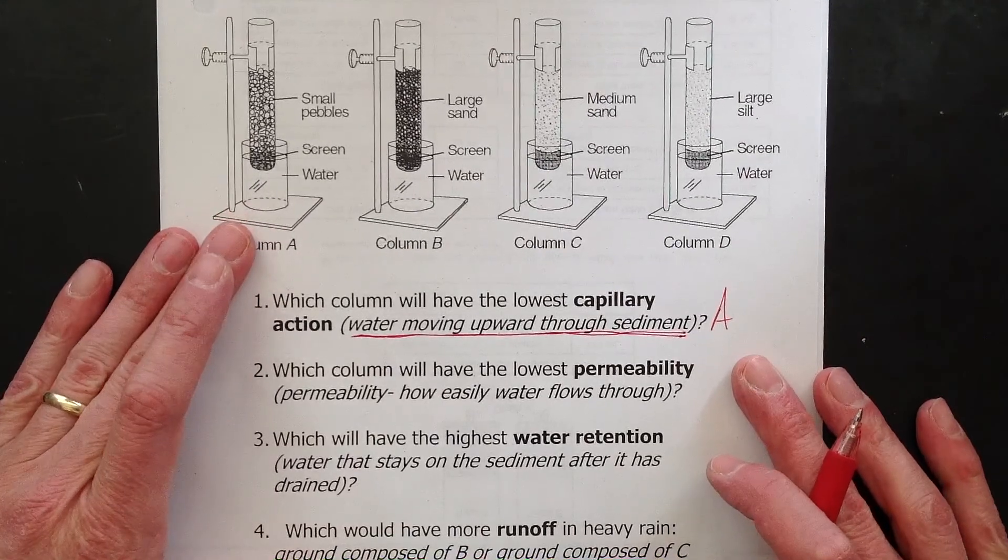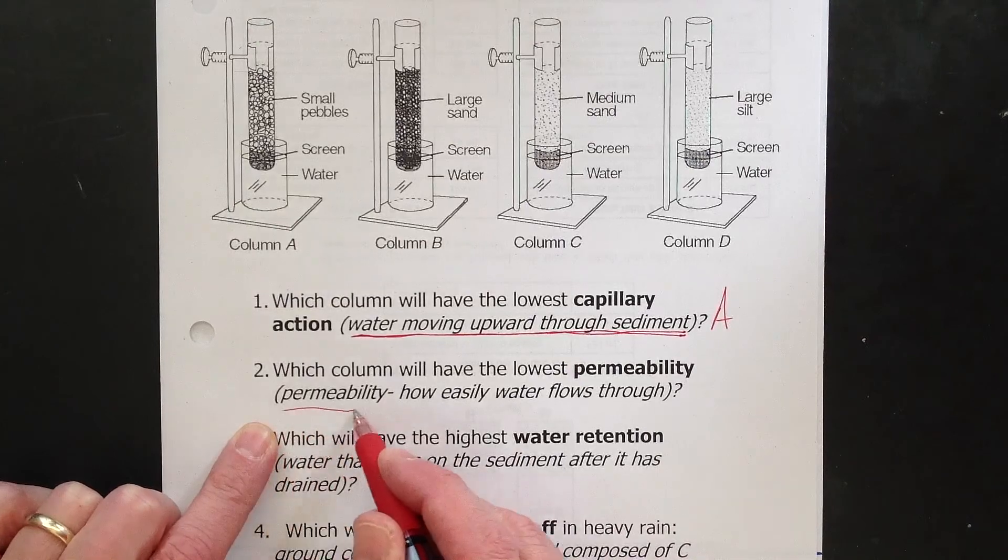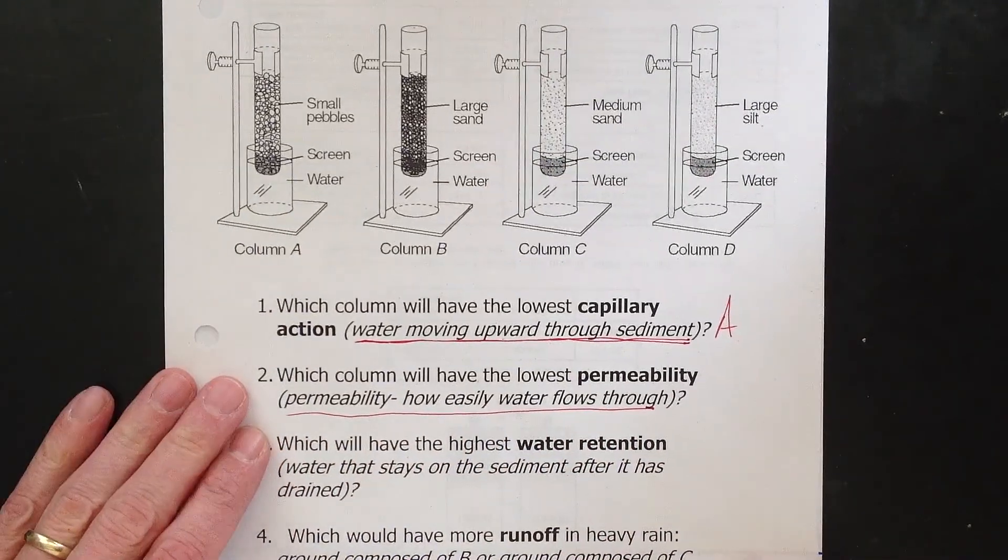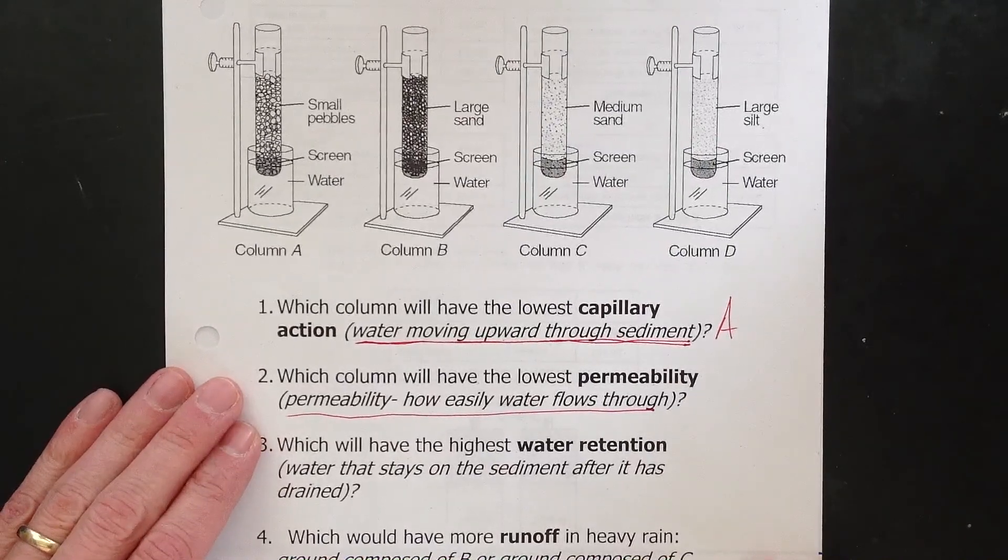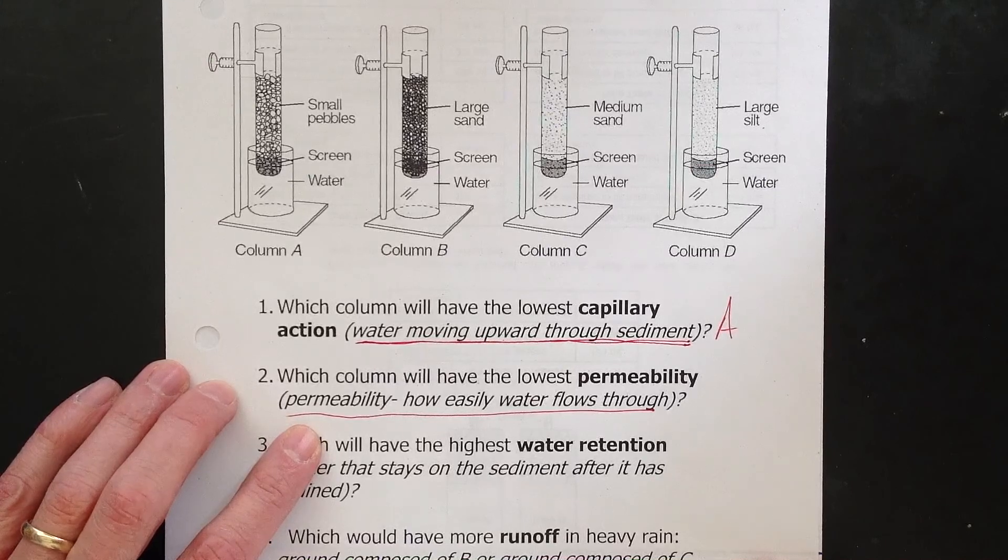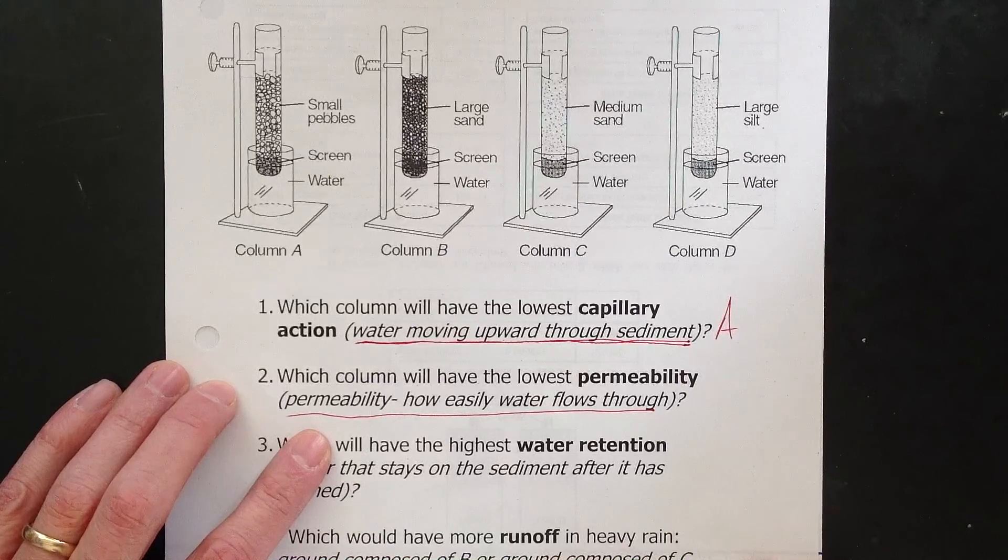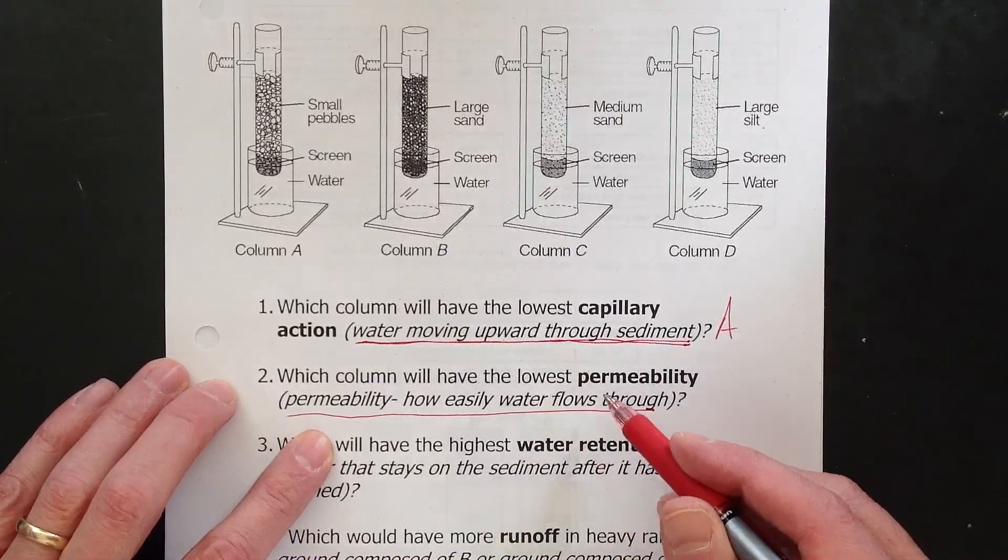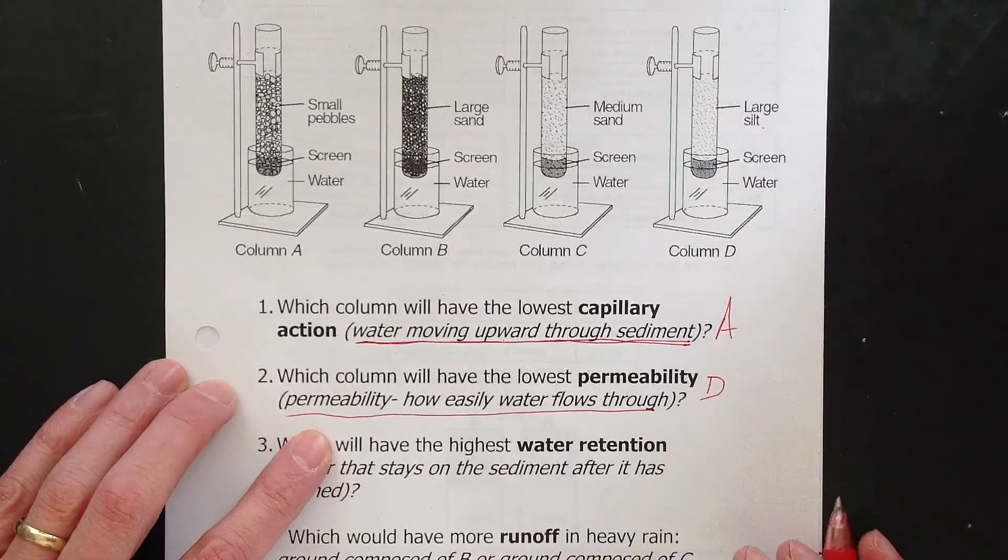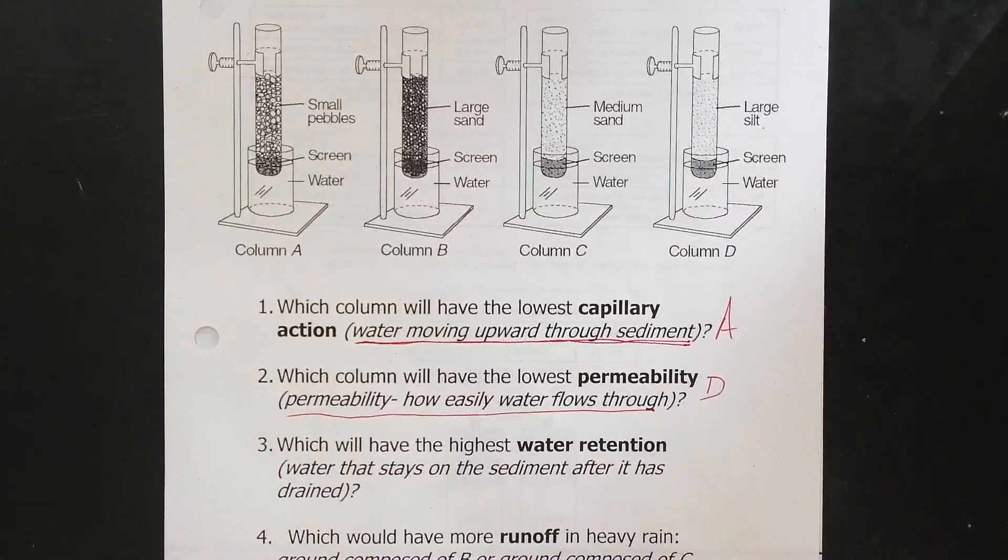Two. Which column will have the lowest permeability? And permeability is how easily water flows through. So the lowest permeability means water does not flow through easily. It flows through difficultly or slowly. That is a function of size. The smaller the sediment, the less permeability. The large sediment, water will flow through fast. So I'm looking for lowest permeability. For the smallest, it is going to be D. Water will go through at the slowest if we were pouring water through. Not necessarily what they show here, but you get the idea.